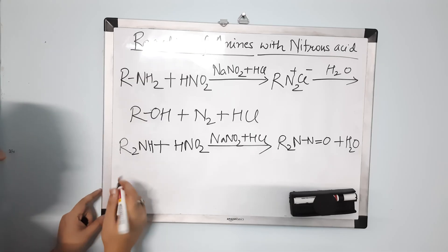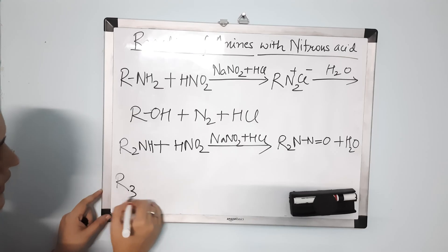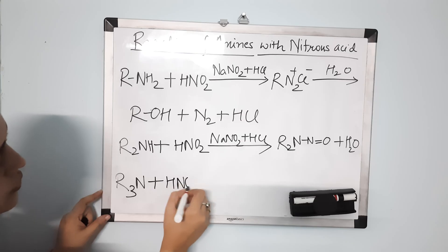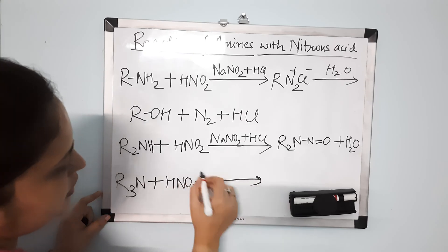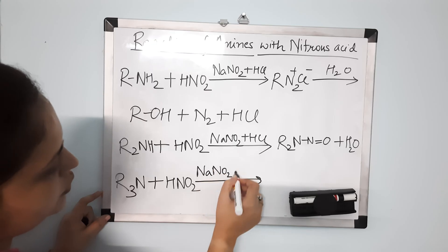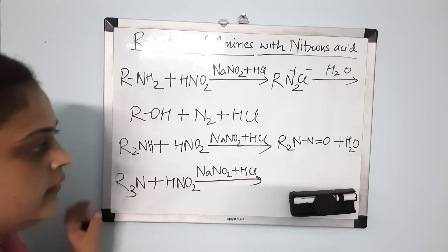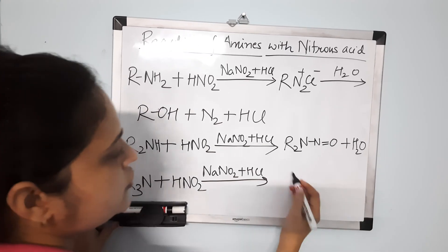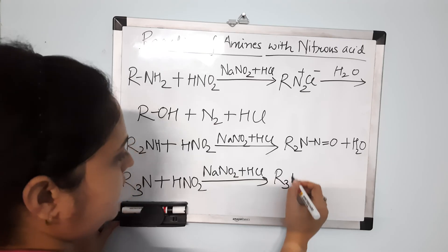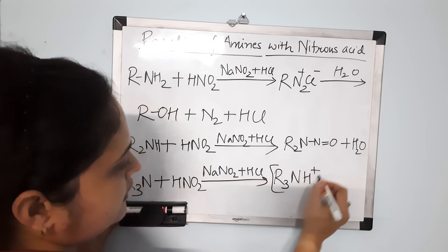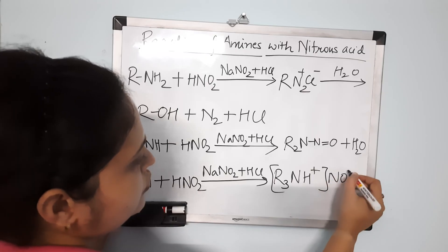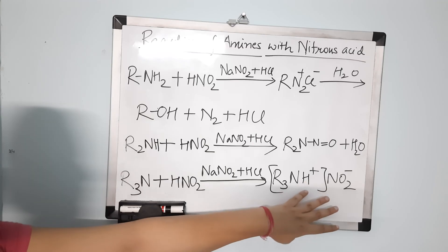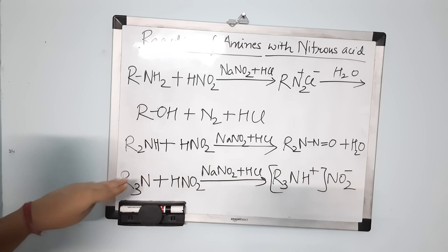Next is tertiary amine. When you react tertiary amine R₃N with HNO₂ — nitrous acid — in the reacting mixture of NaNO₂ and HCl, what you get is a water-soluble salt: R₃NH⁺ NO₂⁻.